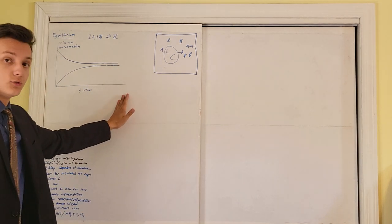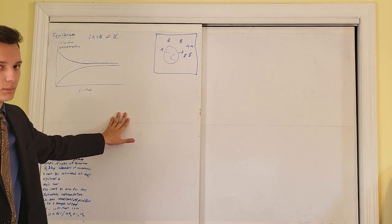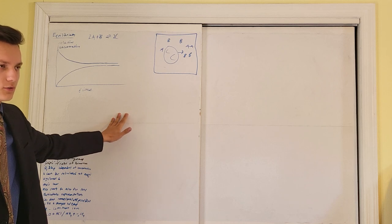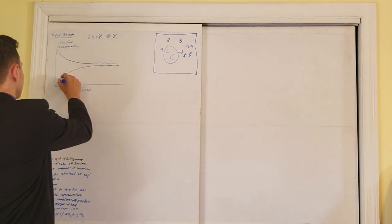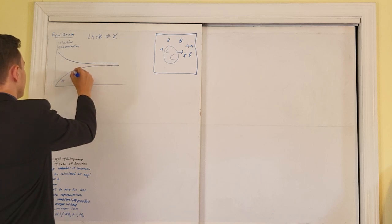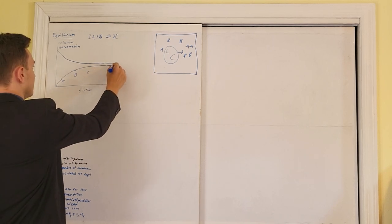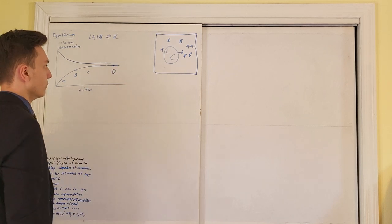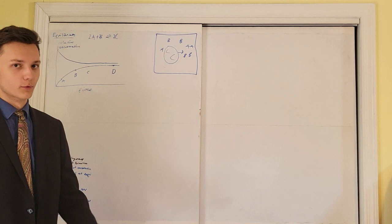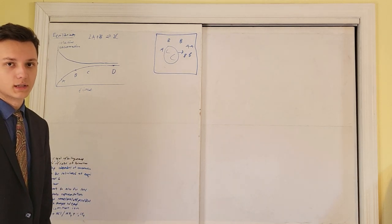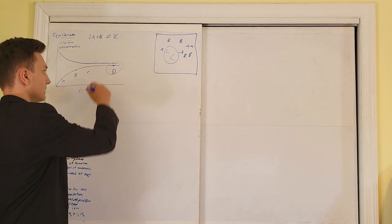These types of graphs do generally pop up on the AP exam — very simple, always multiple choice, usually just one. They'll say, here's point A, B, C, and D — which point represents where the reaction reaches equilibrium? It's easy; you just have to remember what the graph represents. It's obviously the point where the lines level out.